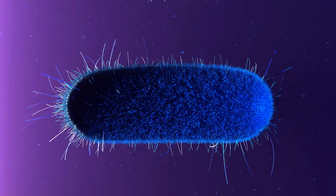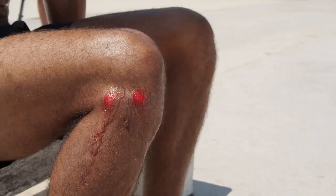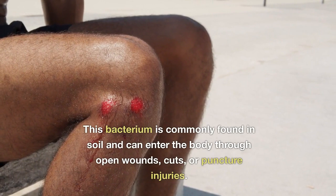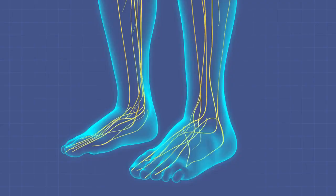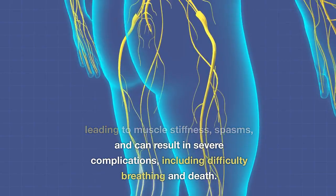What is tetanus? Tetanus, often referred to as lockjaw, is a potentially life-threatening bacterial infection caused by the bacterium Clostridium tetani. This bacterium is commonly found in soil and can enter the body through open wounds, cuts, or puncture injuries. Once inside the body, Clostridium tetani produces a powerful neurotoxin leading to muscle stiffness, spasms, and can result in severe complications, including difficulty breathing and death.